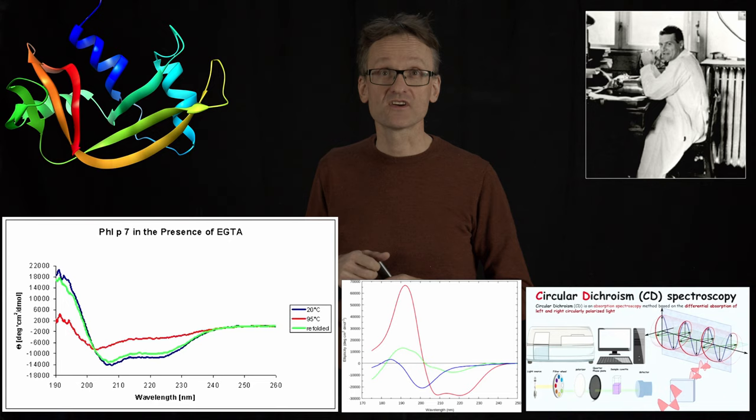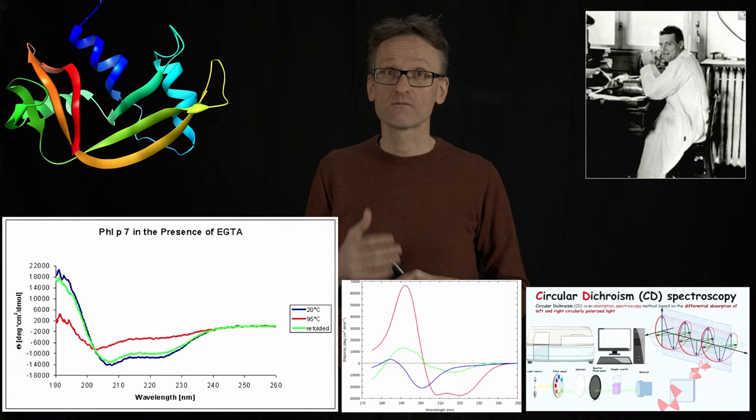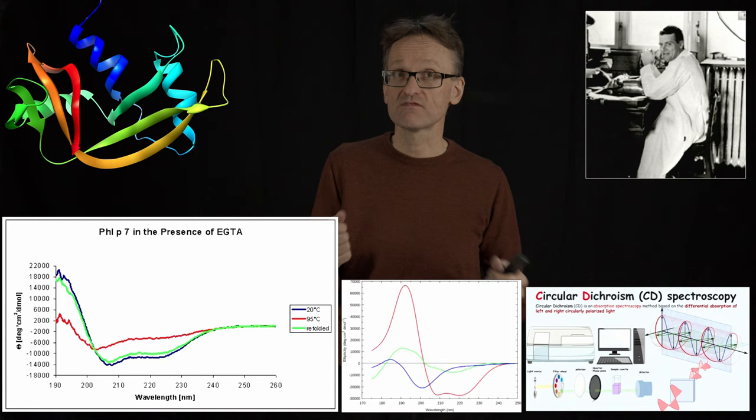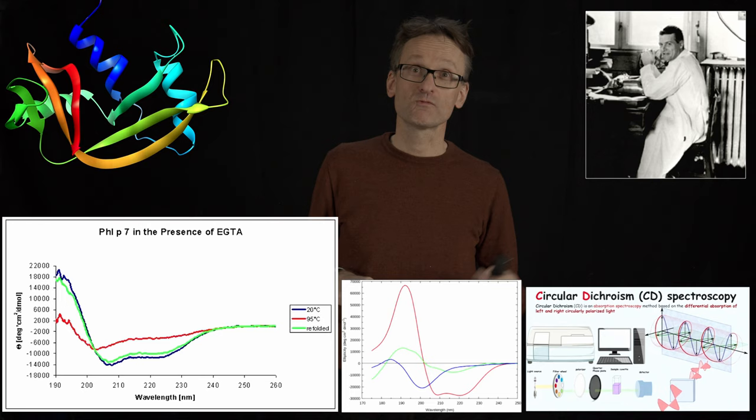At each temperature I likely could fit this to the three curves and say how much helix, sheet, or coil we have. This is a fantastic experiment. The only drawback is that I only get the total amount of helix — I can't say that I have a helix from residues 17 to 25. If you absolutely need that, the first thing you should do is probably bioinformatics and the second would be NMR spectroscopy.